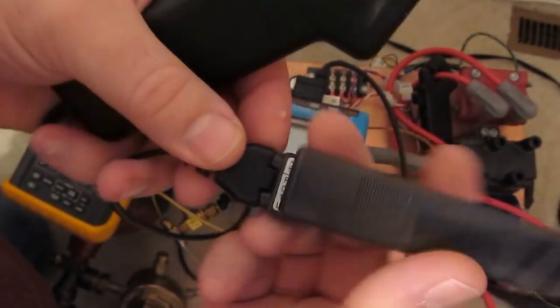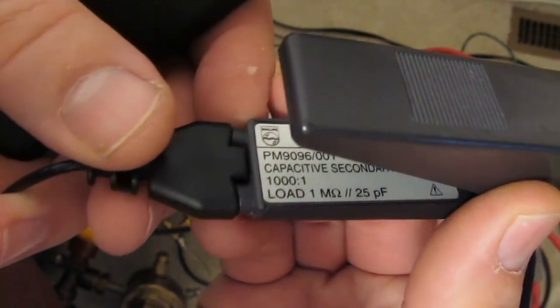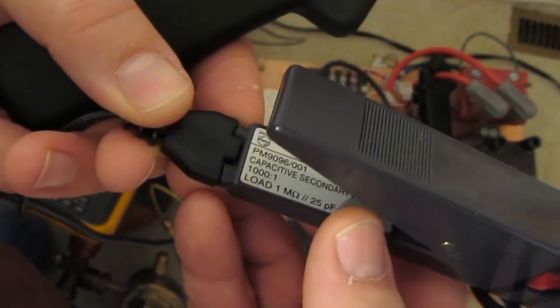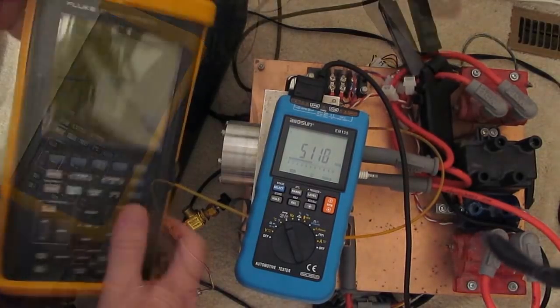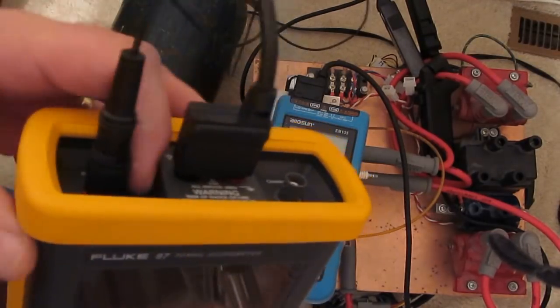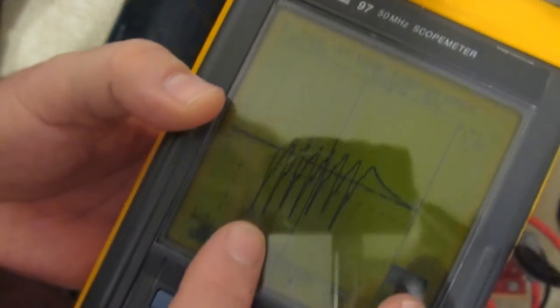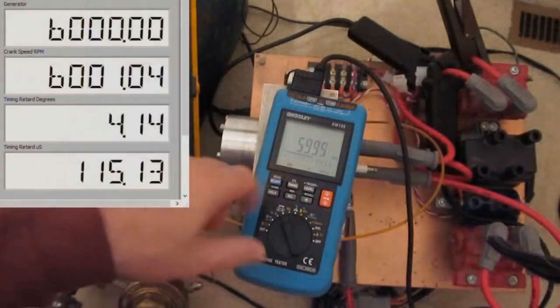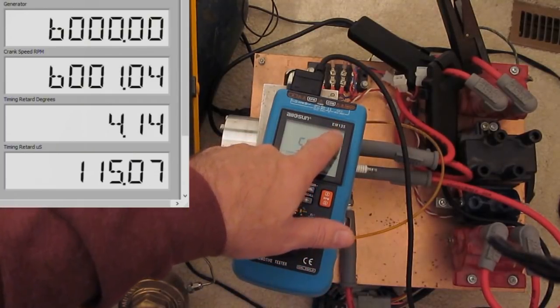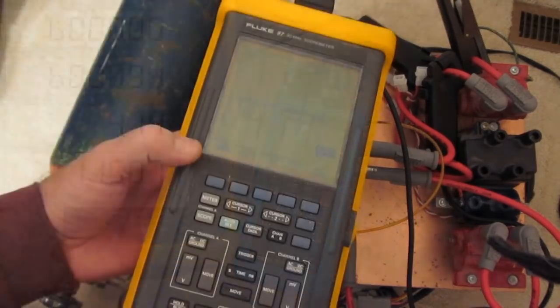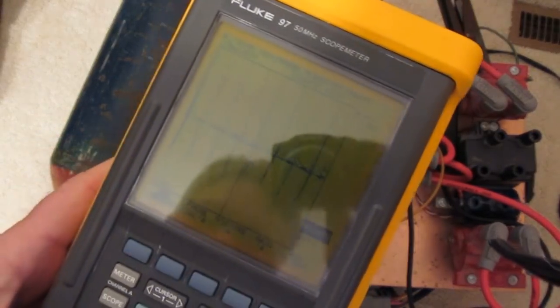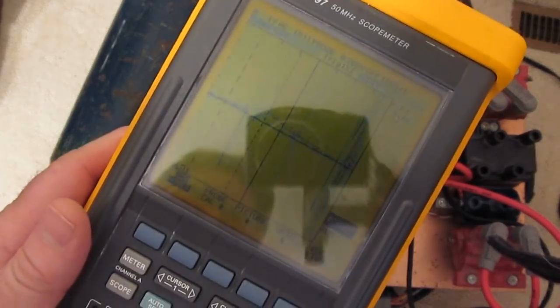The inductive pickup triggers the scope while the capacitive probe collects analog data. The ignition is programmed for 6000 RPM, matching the EM-135 display. On the oscilloscope, each pulse is an ignition event.